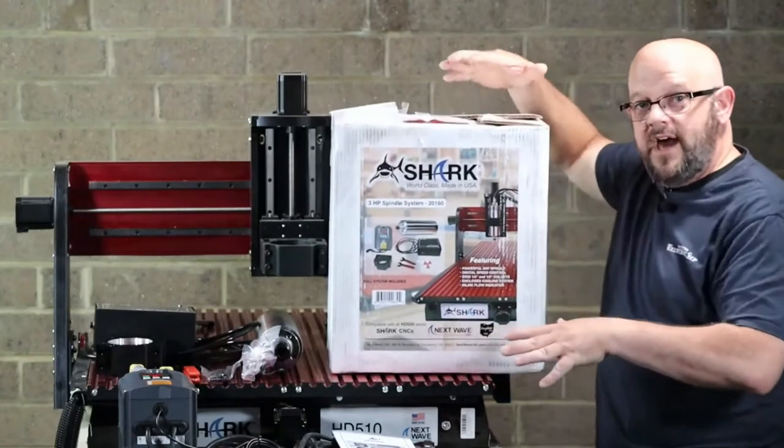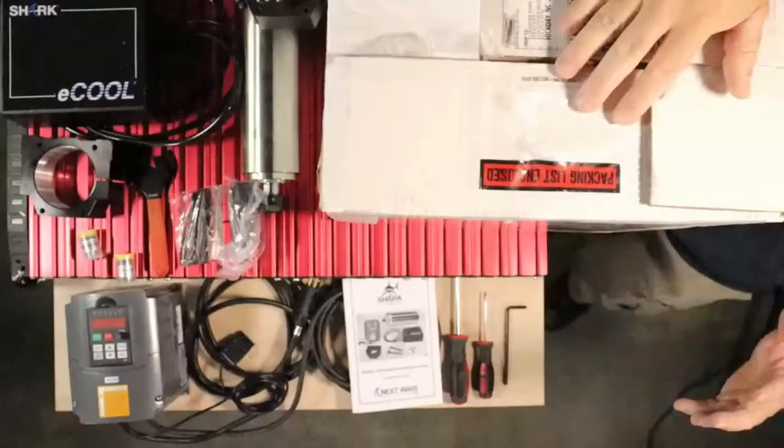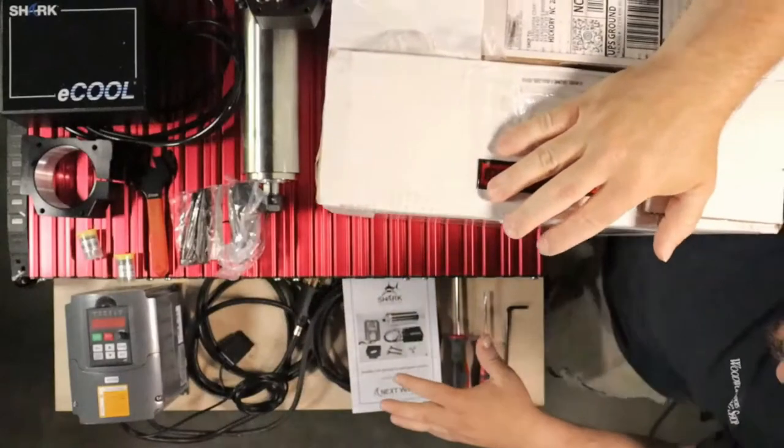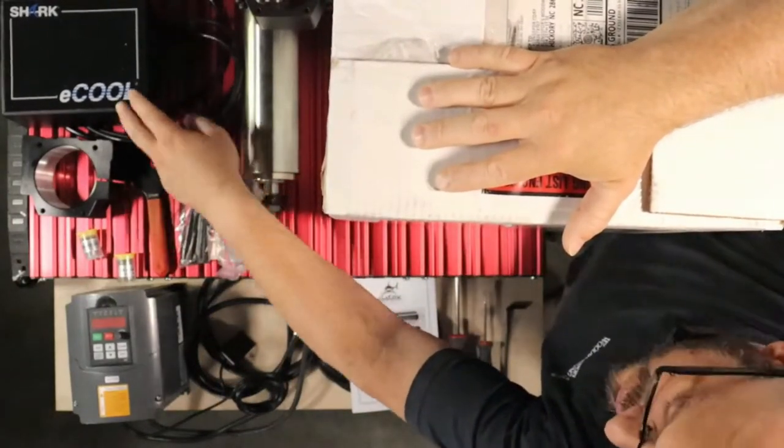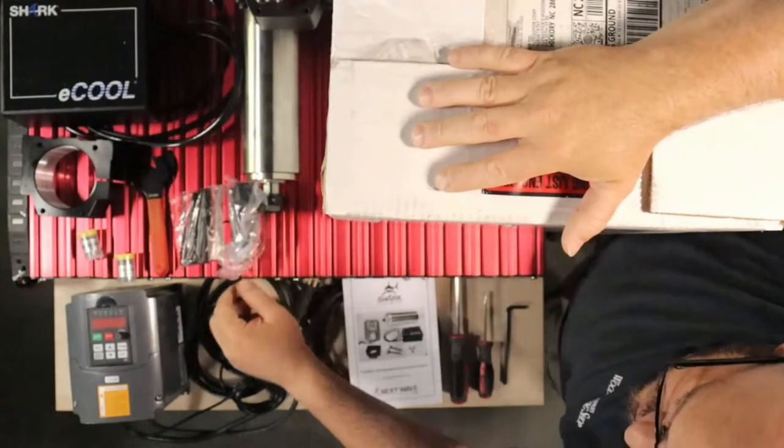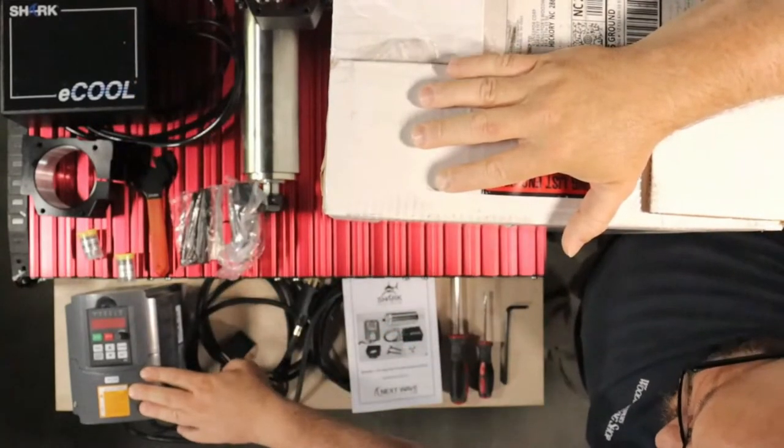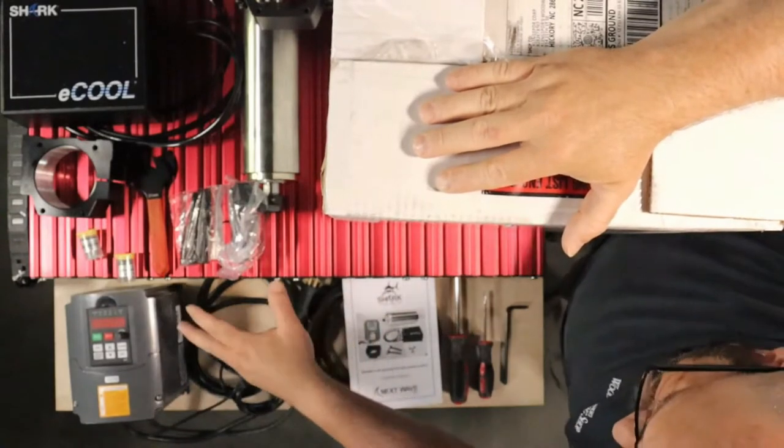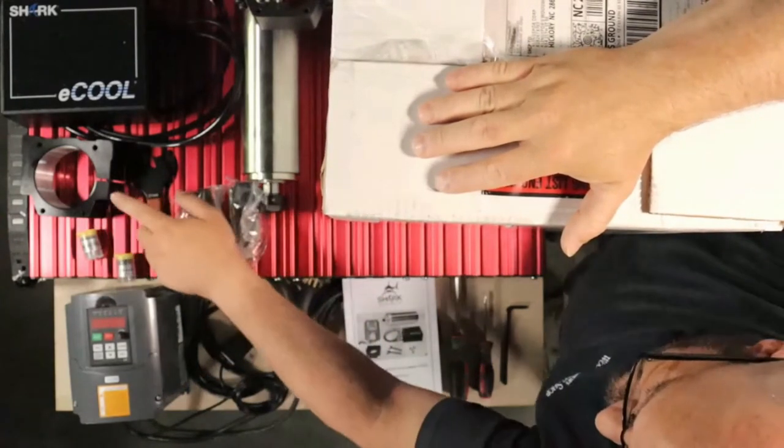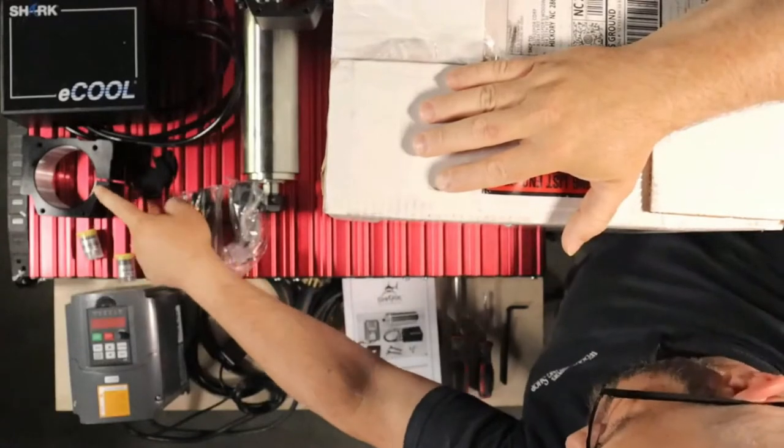We'll start with how we've got everything laid out. I've already unboxed it, and you can see the parts and stuff on the table here. Obviously it starts here with the e-cool system from them. This will get mounted on the back side of the gantry. We've got the VFD system here that'll get mounted down somewhere close to the control box.